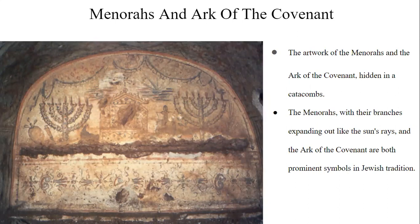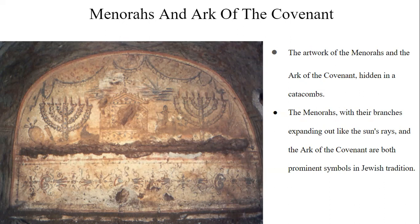First, we begin with the Menorah and the Ark of the Covenant. In the 3rd century, the Roman Empire was a melting pot of different faiths and cultures. Judaism, with its deep history and traditions, was both preserved and challenged in this environment. The artwork of the Menorah and the Ark of the Covenant, hidden in the catacombs, show a community practicing their faith away from the public eye. The Menorah, with its branches spanning out like sun rays, and the Ark of the Covenant are both prominent symbols in Jewish tradition, connecting the religion to its foundational rituals and roots, serving as a testament to God's covenant with the people of Israel. The artwork also strengthened community identity and cohesiveness by reminding them of their common origin and faith.